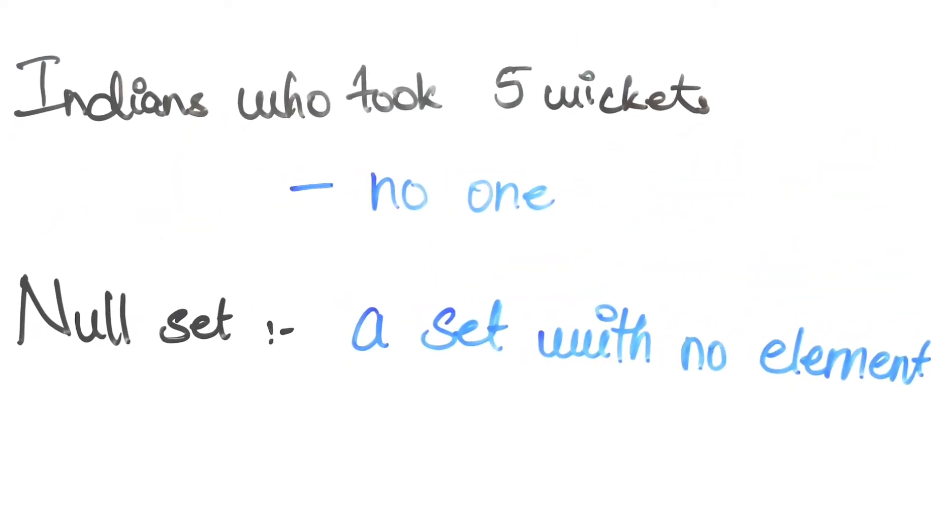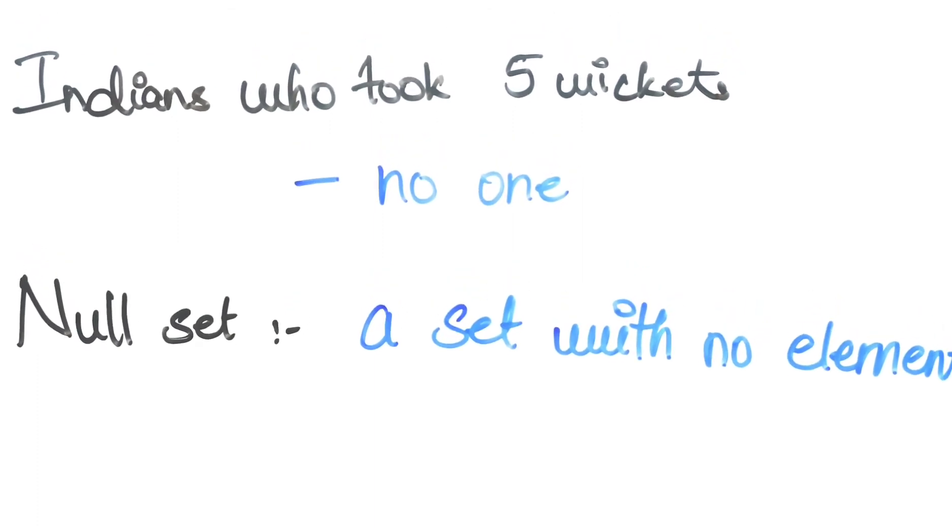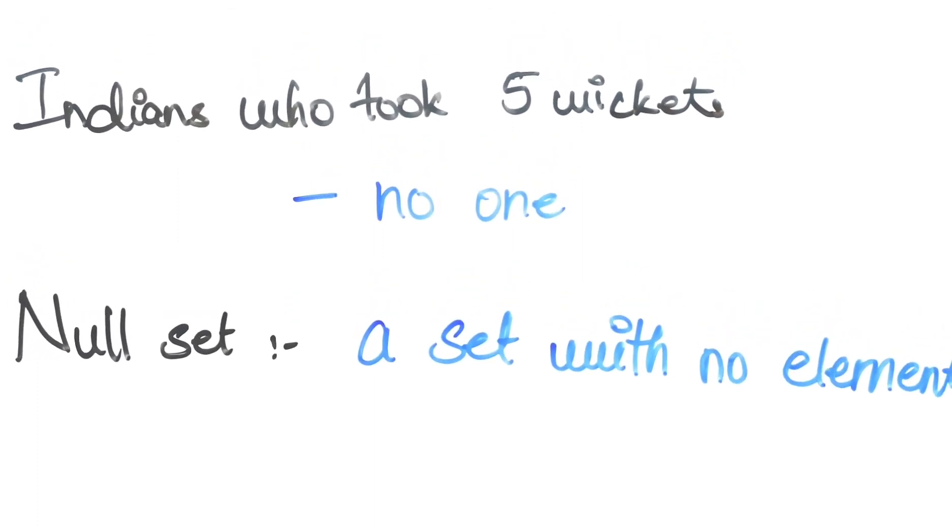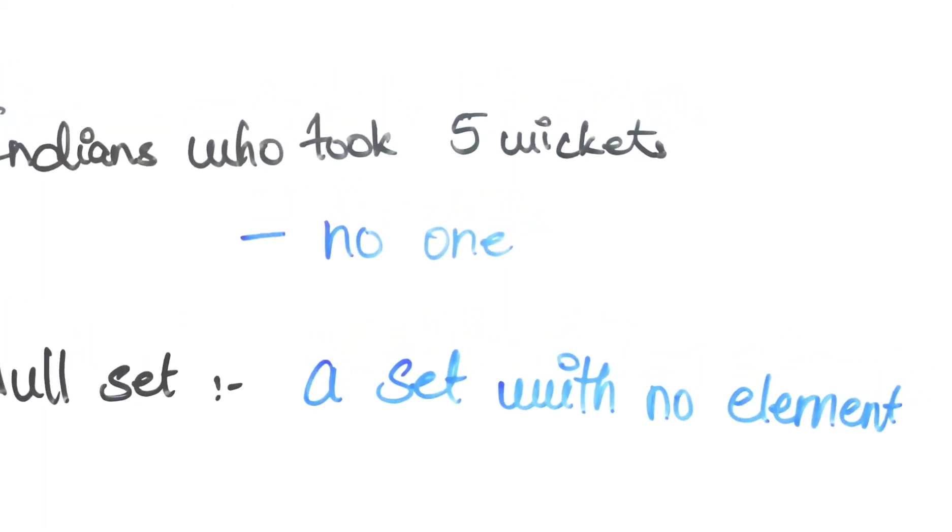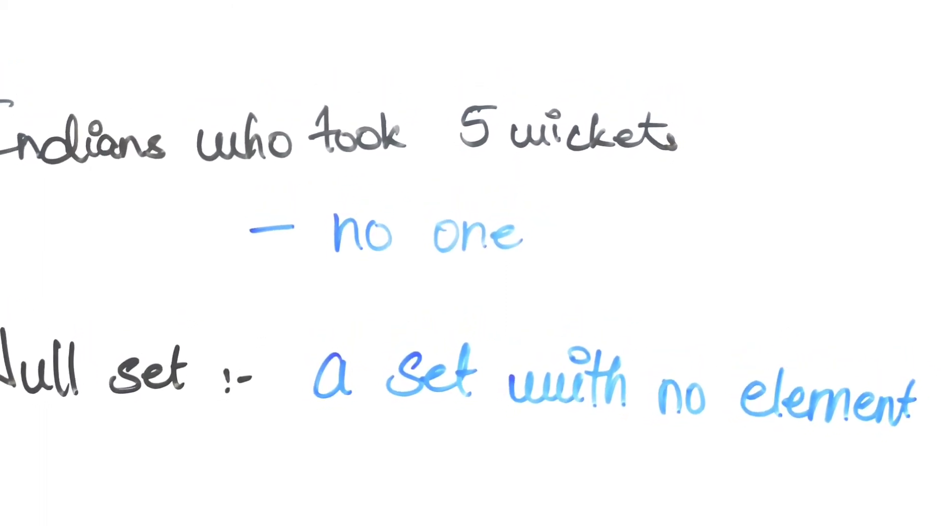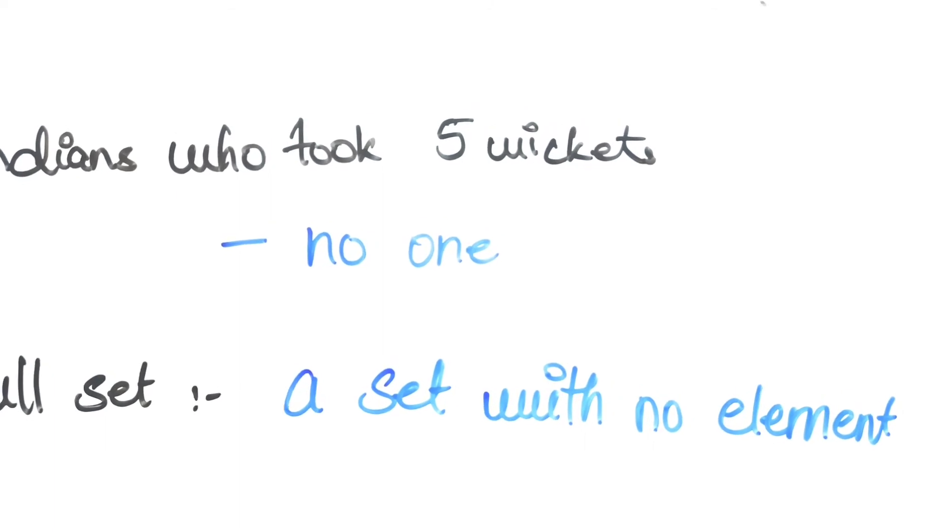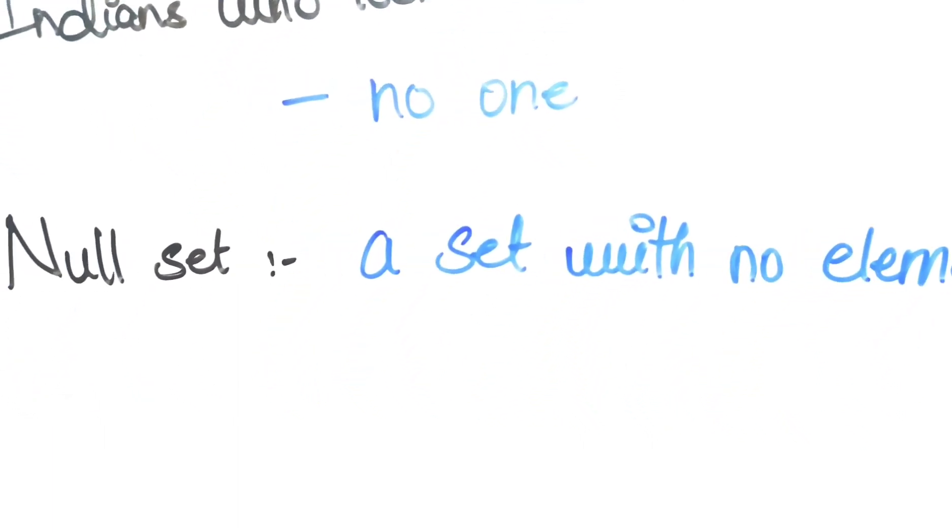Now in the same match, what if I were to make a set of Indians who took 5 wickets? Is there anyone who did that? Unfortunately, no. So this set would be a null set, a set with no element.